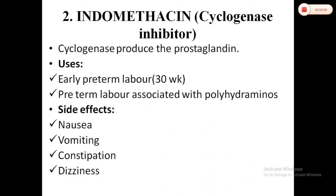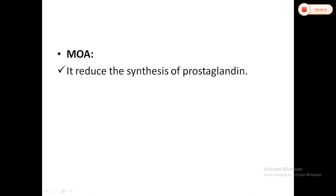The second tocolytic drug is indomethacin, which is a cyclooxygenase inhibitor. Cyclooxygenase is an enzyme that produces prostaglandins. It is used in early preterm labor associated with polyhydramnios. Side effects include nausea, vomiting, constipation, and dizziness. Mechanism of action: it reduces the synthesis of prostaglandins.